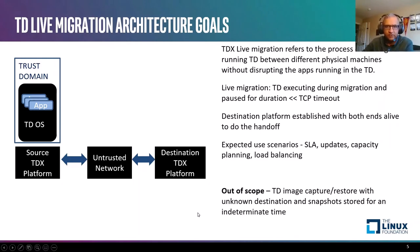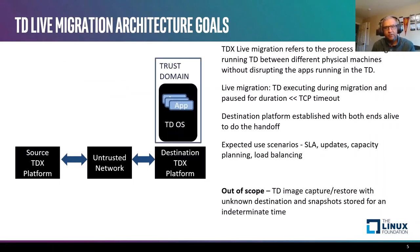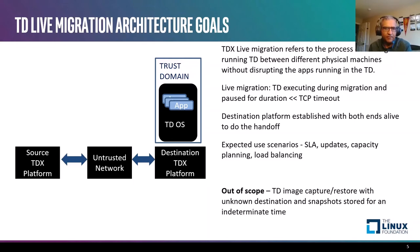The goals for the live migration architecture for TDX are to move a running TD between different physical machines that are TDX-compatible. The goal is to support live migration, which means the execution of the workloads in those TD VMs being migrated should not be affected — meeting requirements to ensure that network connections are kept alive. The source and destination platforms are both active and running during the handoff. Expected use case scenarios for cloud environments include meeting service level agreements, performing updates to the platform in terms of firmware and host software, and various capacity and load balancing operations.